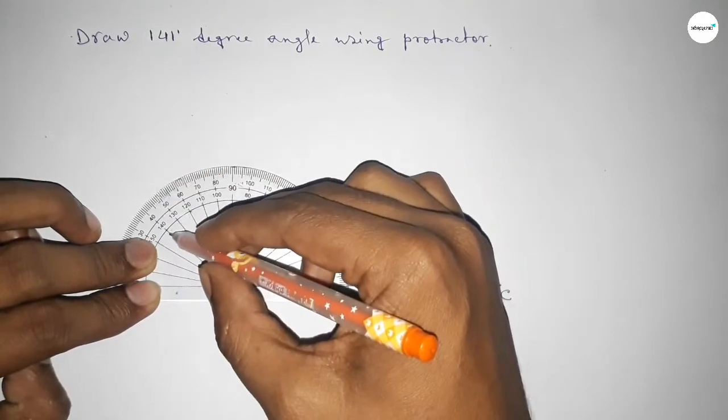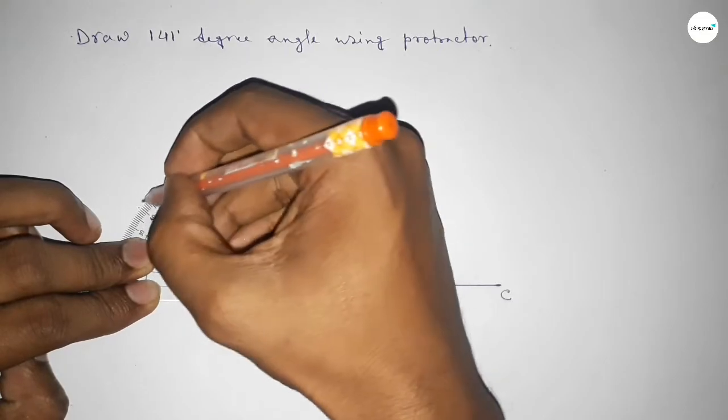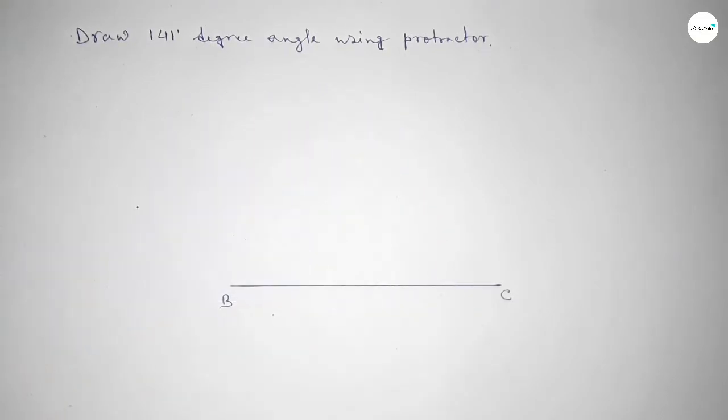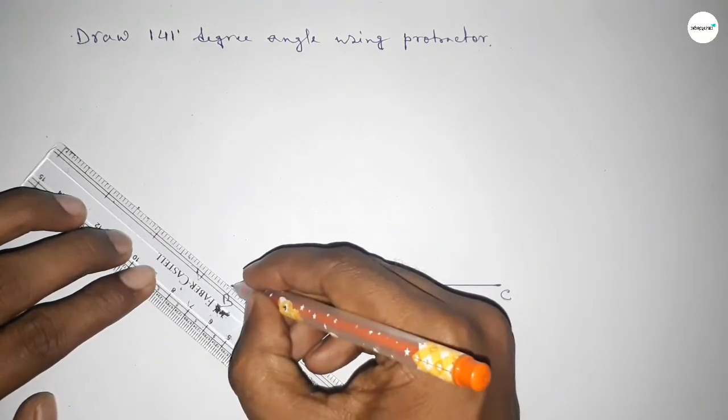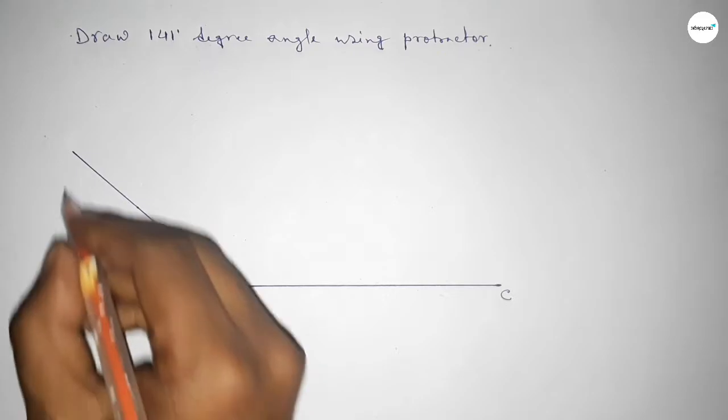120, 130, 140, and this is 141 degrees. Now joining this side to get 141 degrees. Now taking here point A.